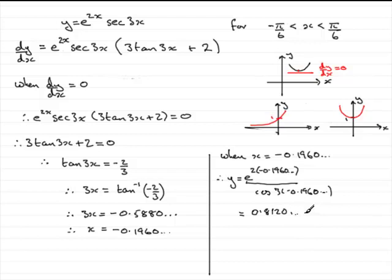So, you have your coordinates. You have your x value, which is going to be minus 0.1960, and your y value, which is going to be 0.8120.